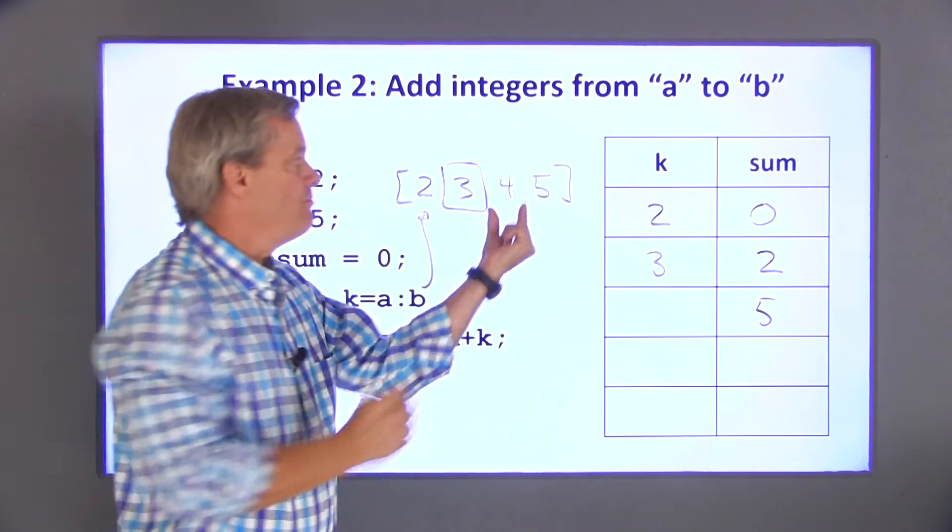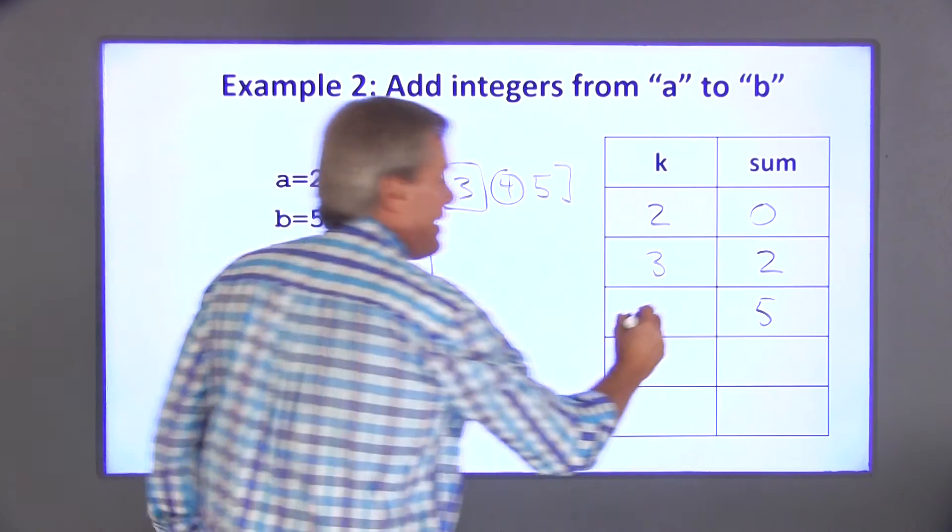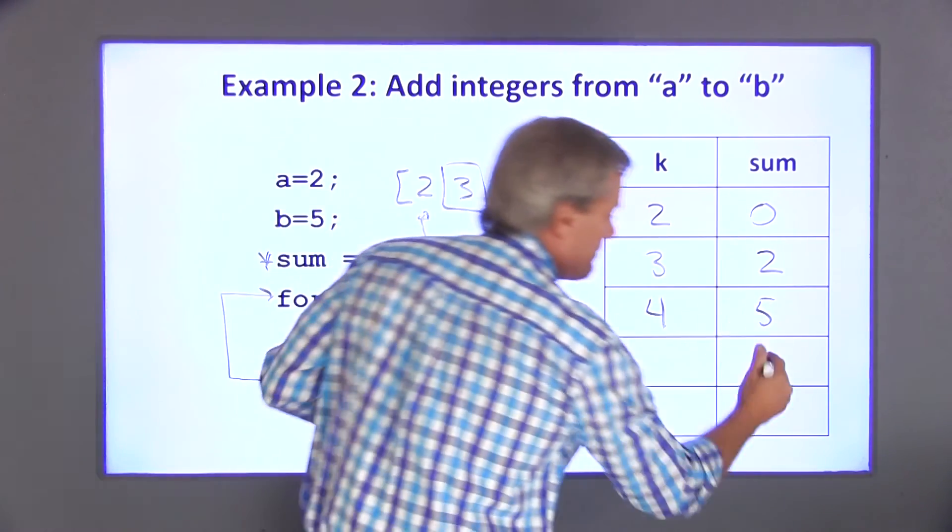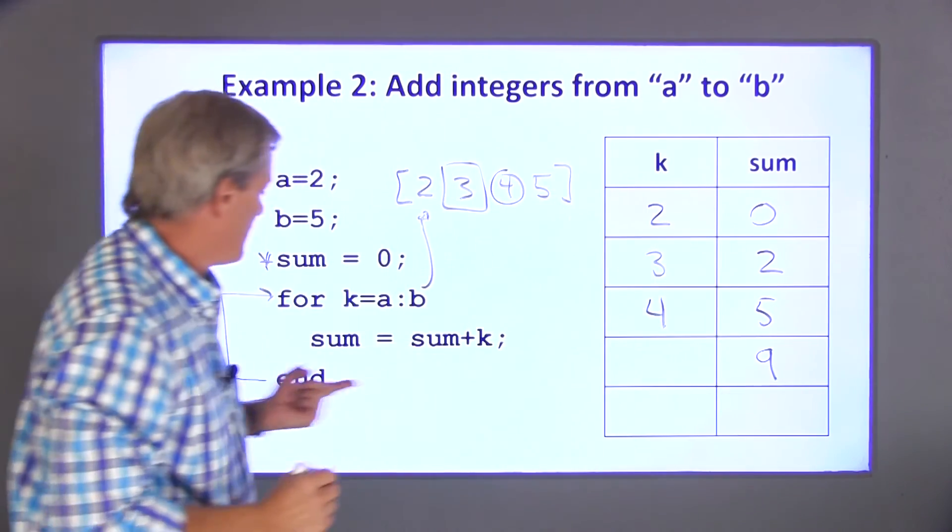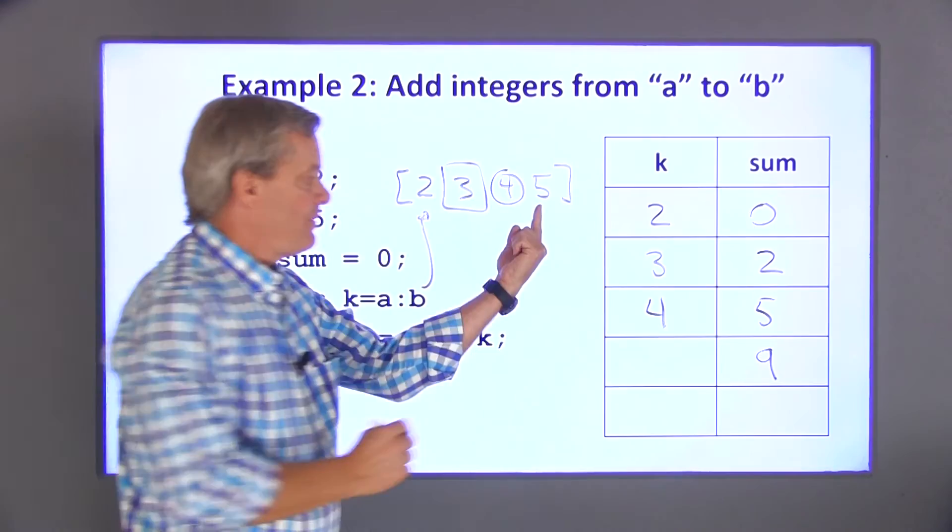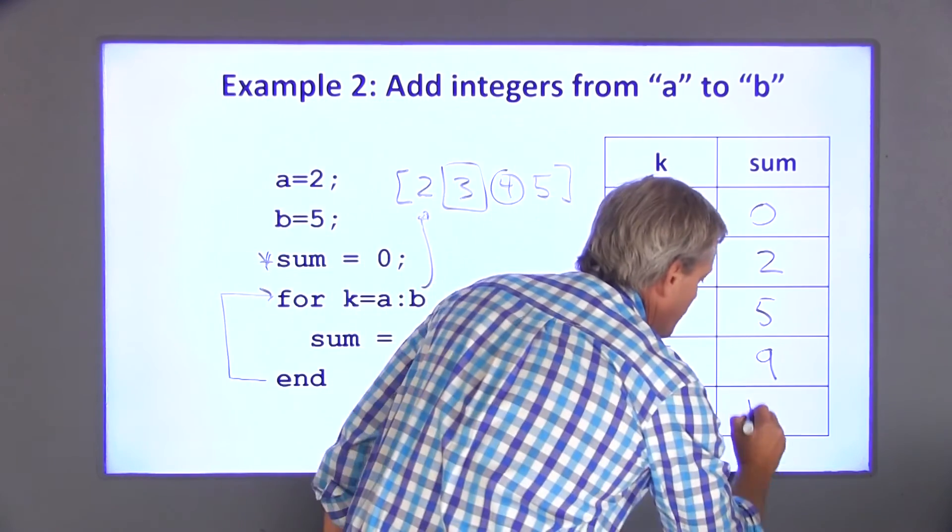Go back up to the for statement. Move to the next element in this array. So now k is equal to 4. This adds 4 plus 5 to get 9. That takes me to the end statement. The last time through the loop, k is equal to 5. 5 and 9 is 14.